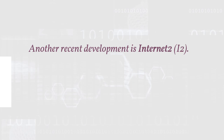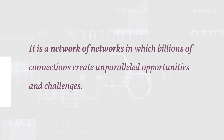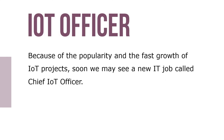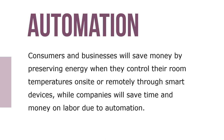The recent development is Internet2, or i2. It's a network of networks in which billions of connections create unparalleled opportunities and challenges. Although IoE refers to all the connections that would be made, the Internet of Things, IoT, refers to the physical objects that are connected to the Internet and therefore to all other physical objects. Because of the popularity and the fast growth of IoT projects, soon we may see a new IT job called the Chief IoT Officer. Consumers and businesses will save money by preserving energy when they control their room temperatures on site or remotely through smart devices, while companies will save time and money on labor due to automation.